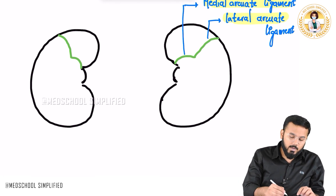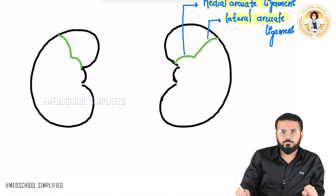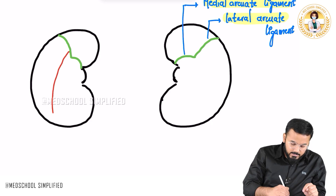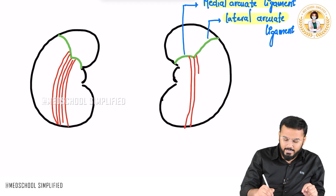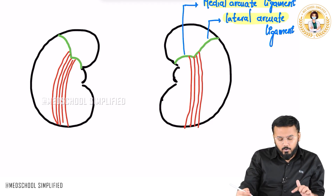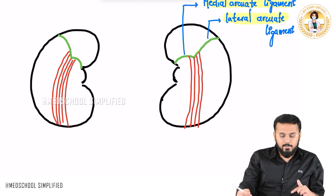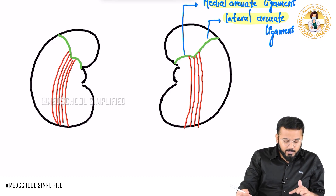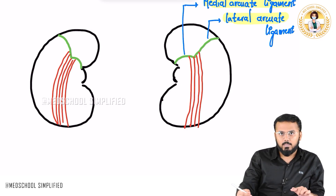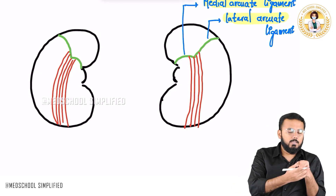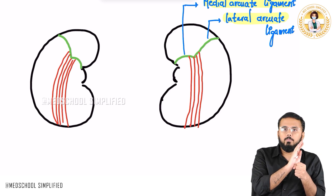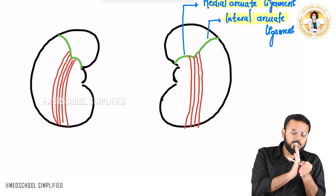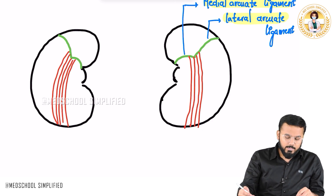Apart from the arcuate ligaments, we also have some very important muscles. There are no muscles sitting on the kidneys — what I mean is that on the backside, these muscles are in contact with the kidney at this particular location. They are in contact with the posterior side of the kidney — muscles like psoas, quadratus lumborum, and transverse abdominis. So that is what the relation means.